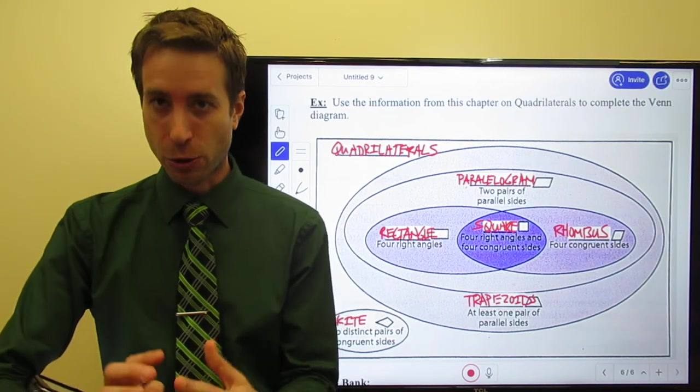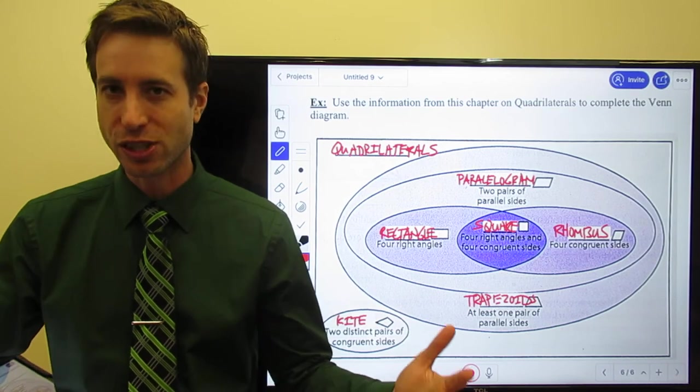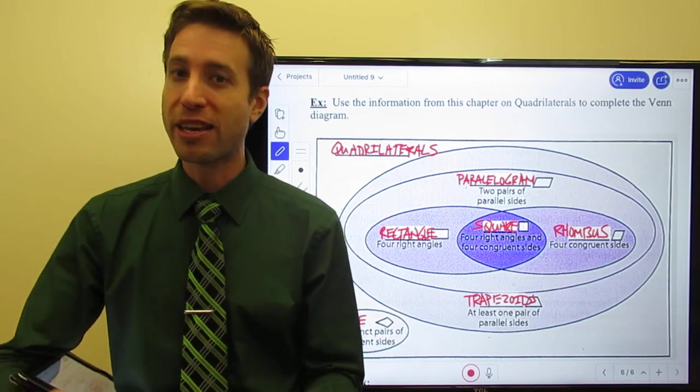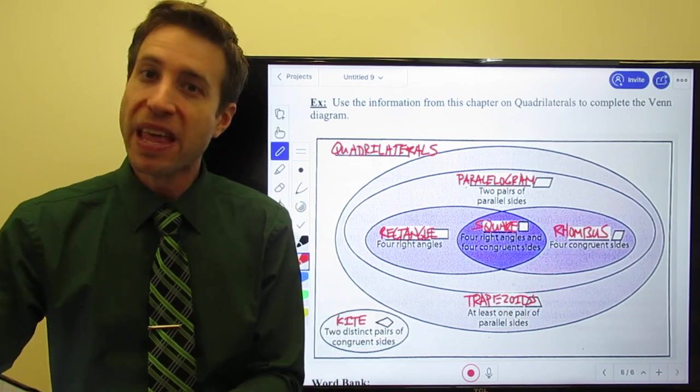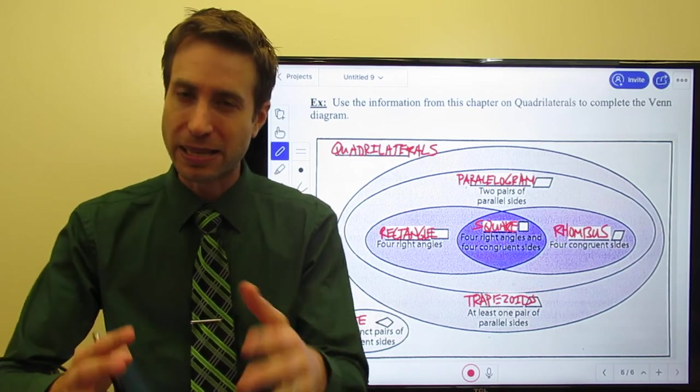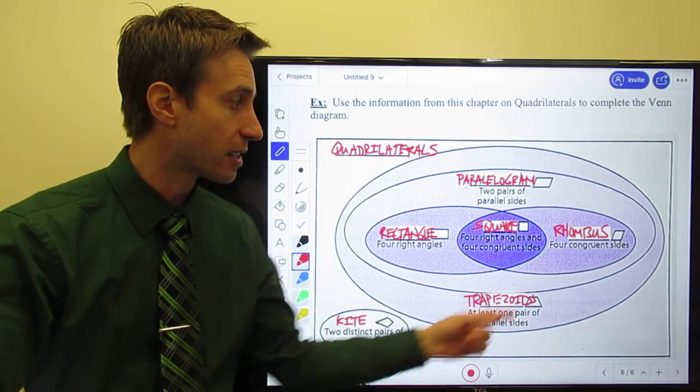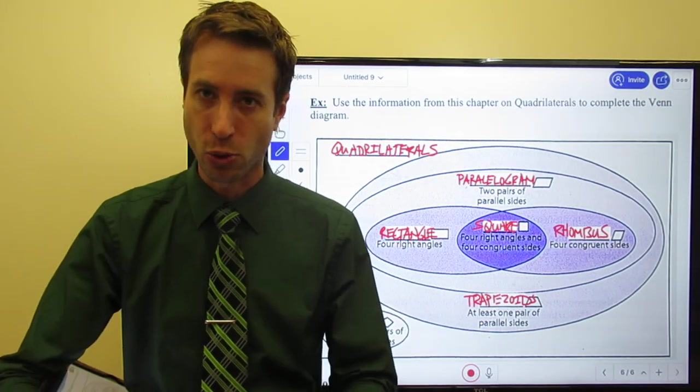Hopefully, that helps sort of summarize all of the figures that we've looked at. This entire section has been about quadrilaterals. I would also encourage you, each of these shapes has its own properties, and it'll be very easy to get these properties mixed up, right? To mix up the properties of kites and rhombuses, or to mix up the properties of rectangles and trapezoids.